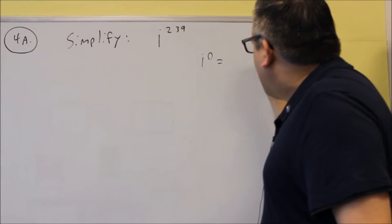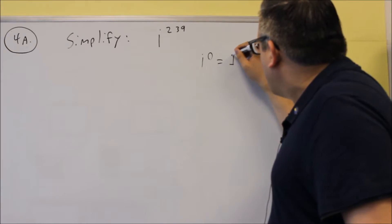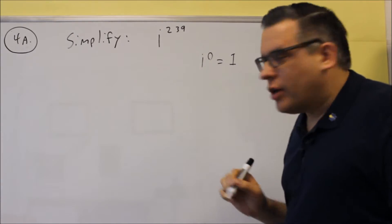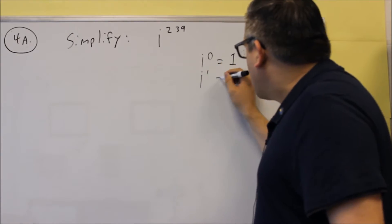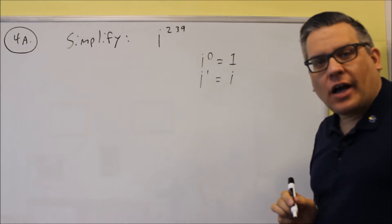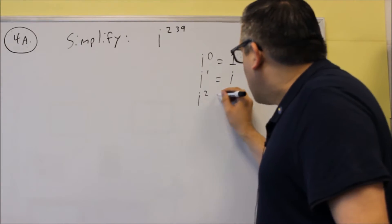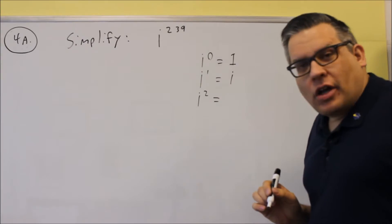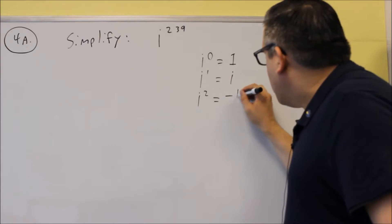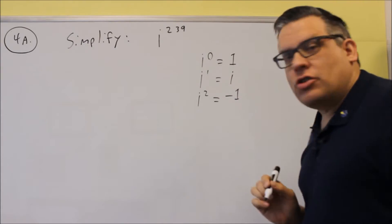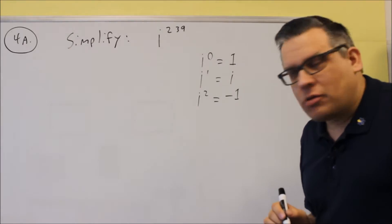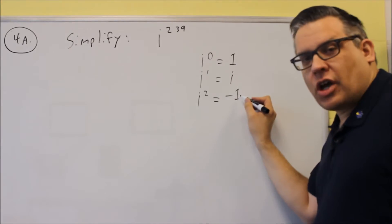If you have i to the 0, anything to the 0 power is equal to 1. i to the first power, of course, is just going to be i. If you have i squared, then i squared is equal to negative 1, because by definition, your i is equal to the square root of negative 1. So if you square both sides, you get negative 1 there.